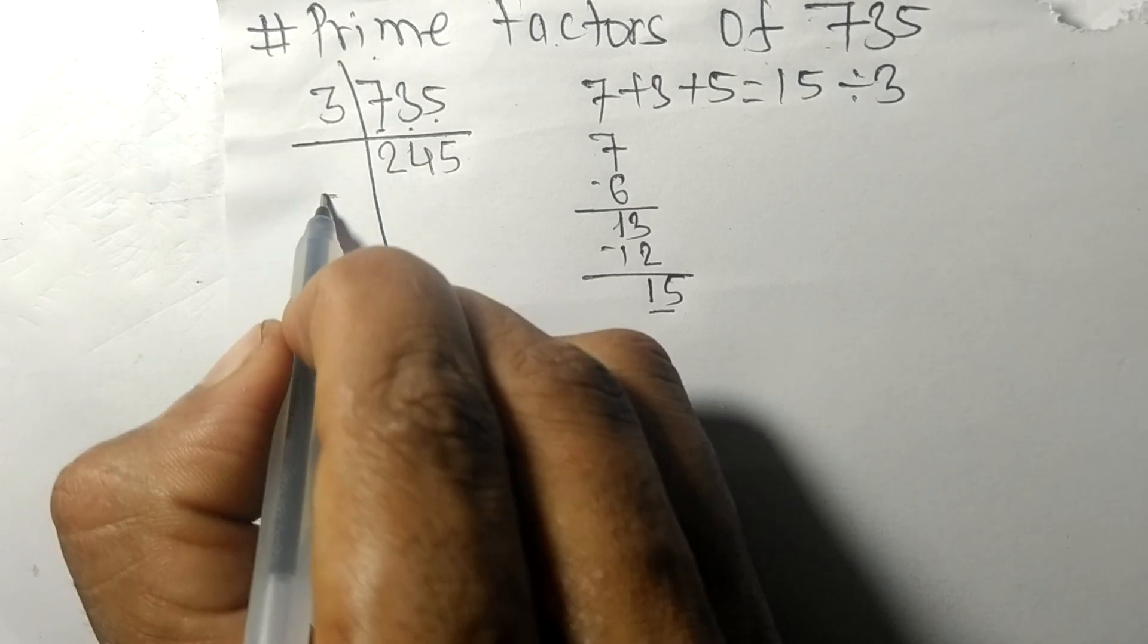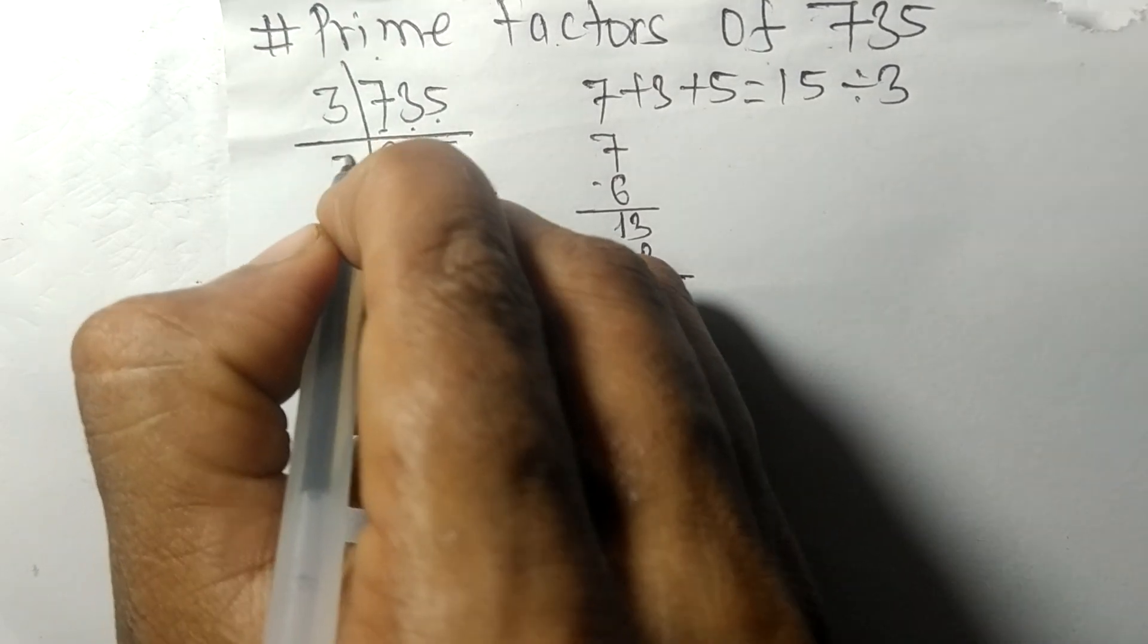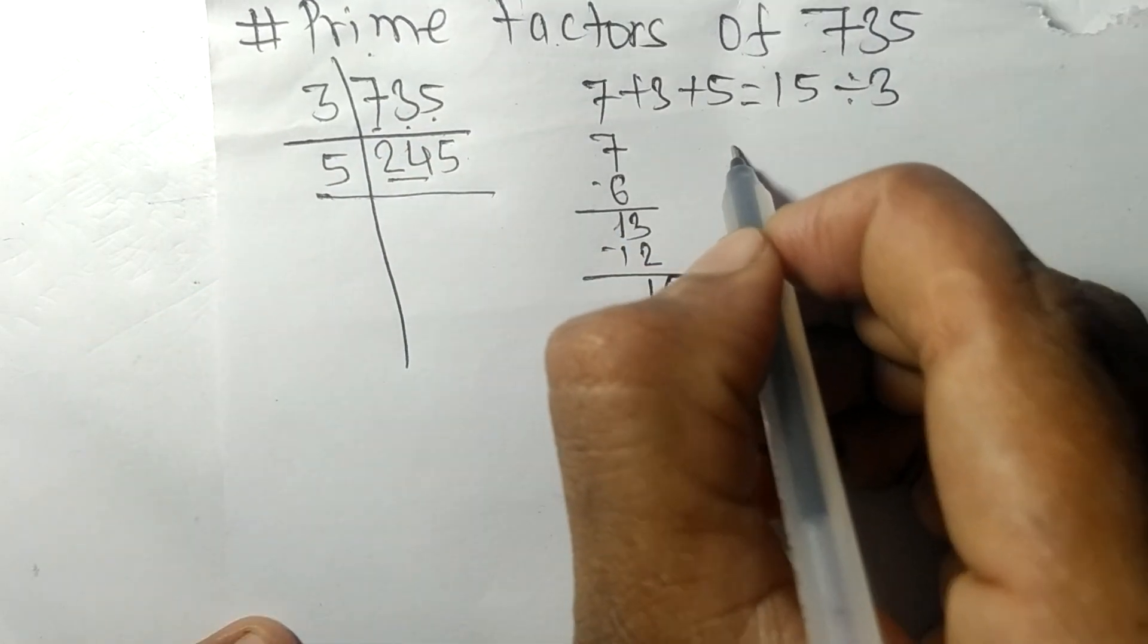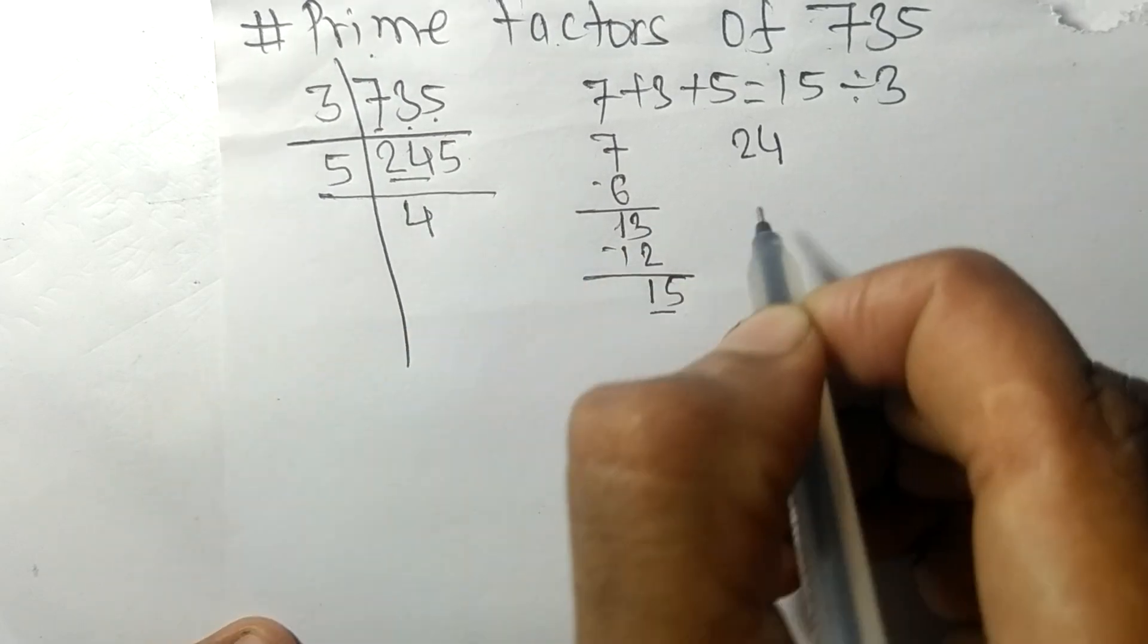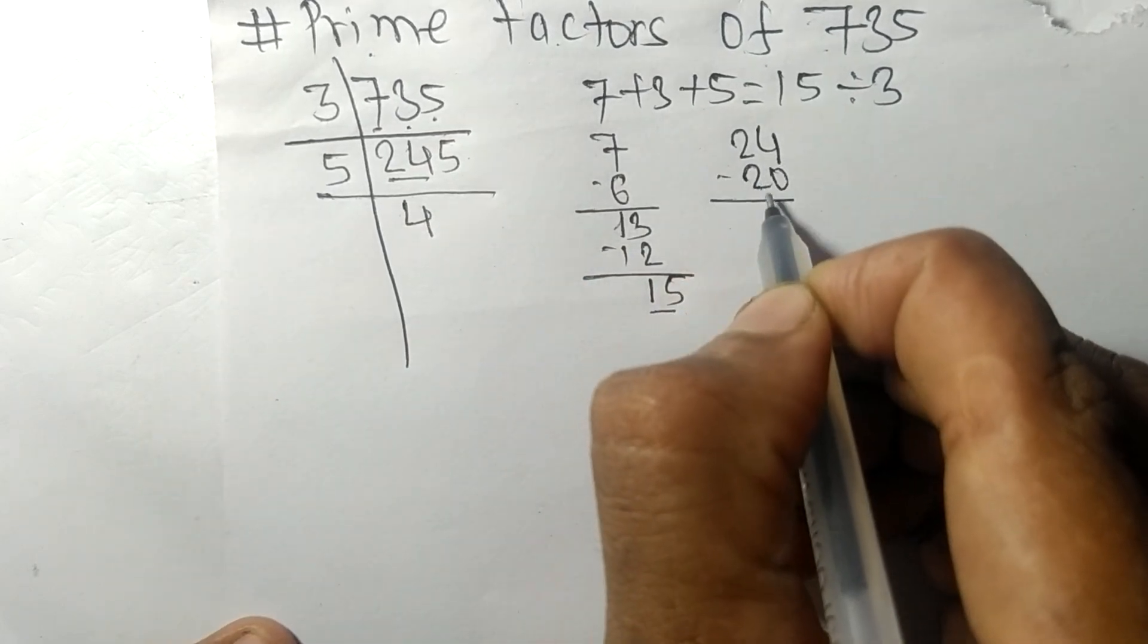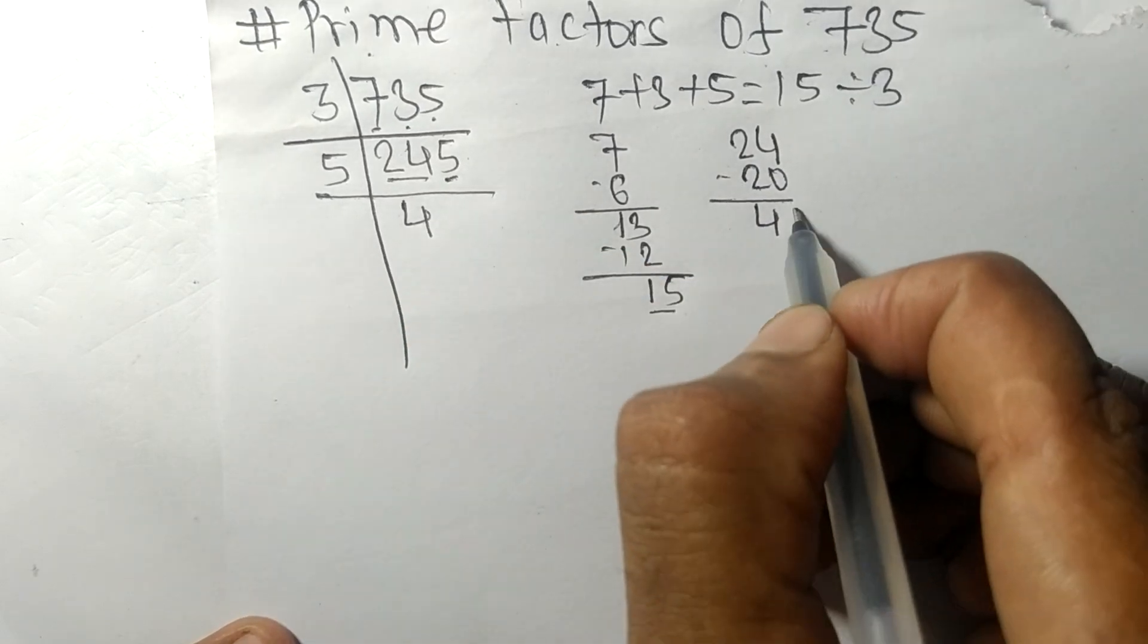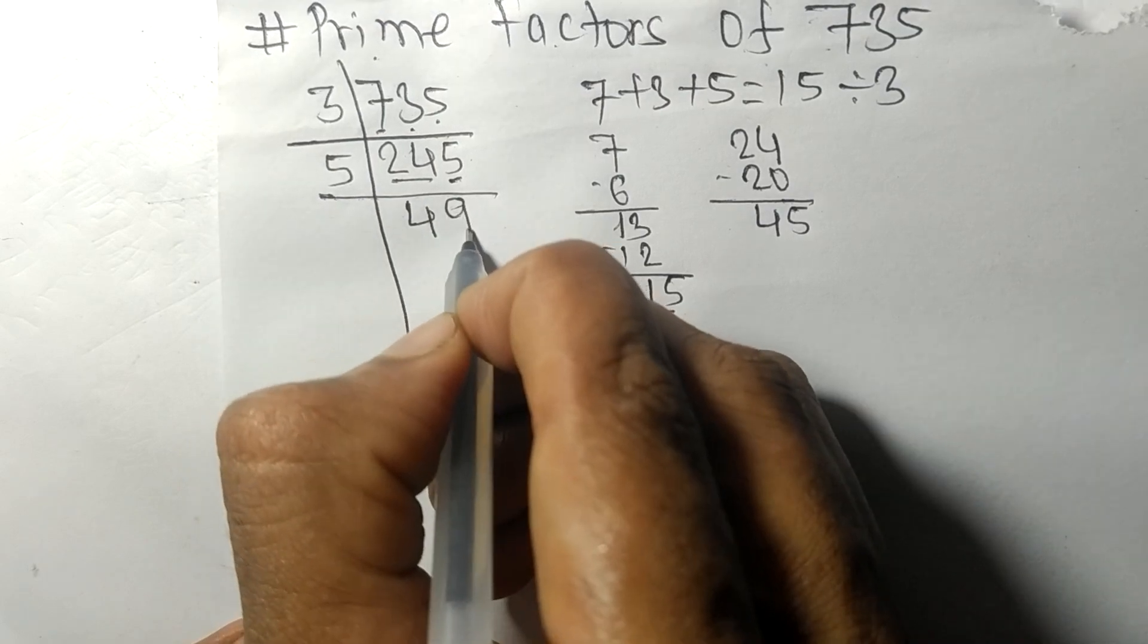Now we got 245, which is exactly divisible by 5. First we have 24—5 times 4 means 20, subtracting gives 4, and bringing down 5 gives 45. 5 times 9 means 45.